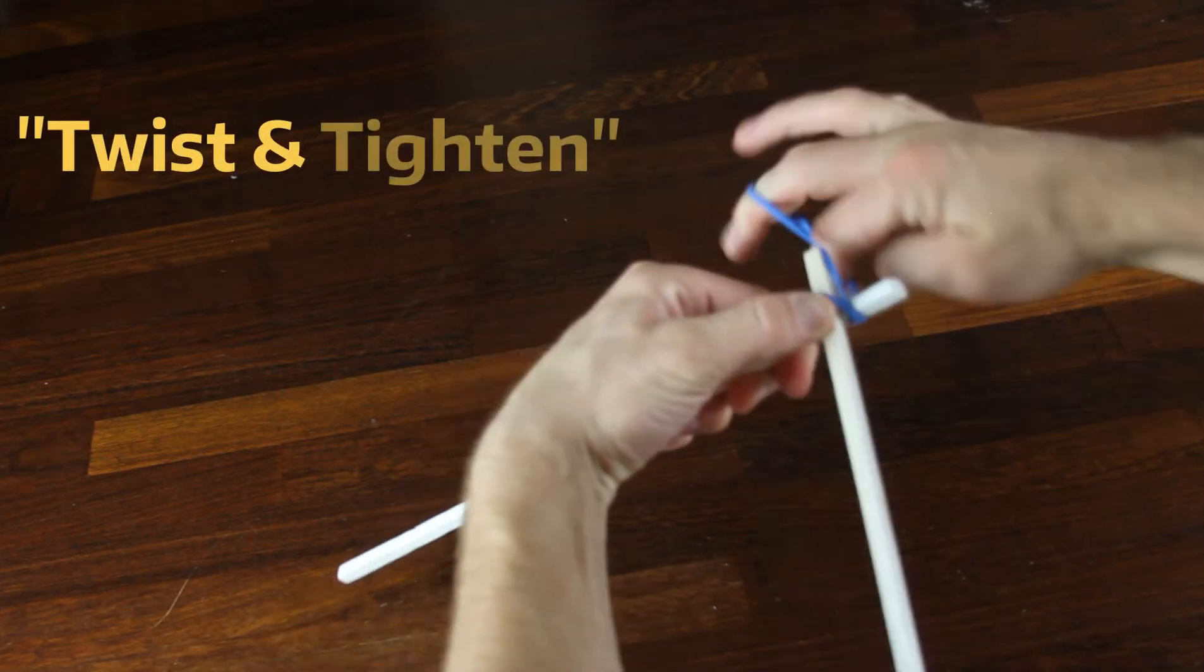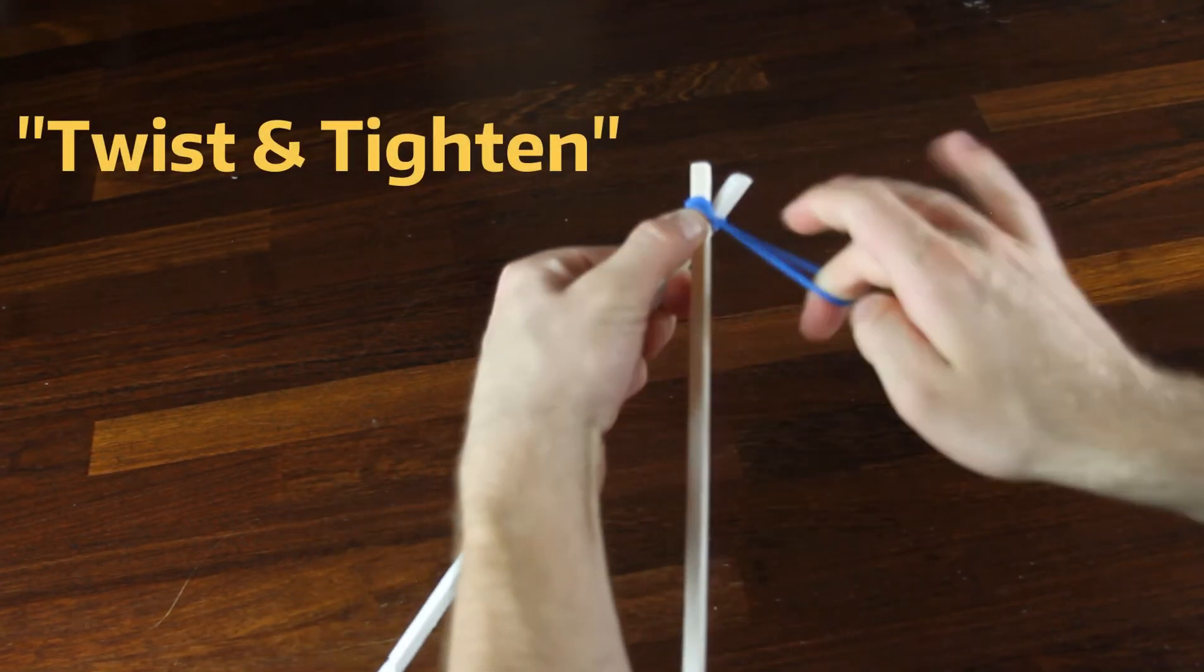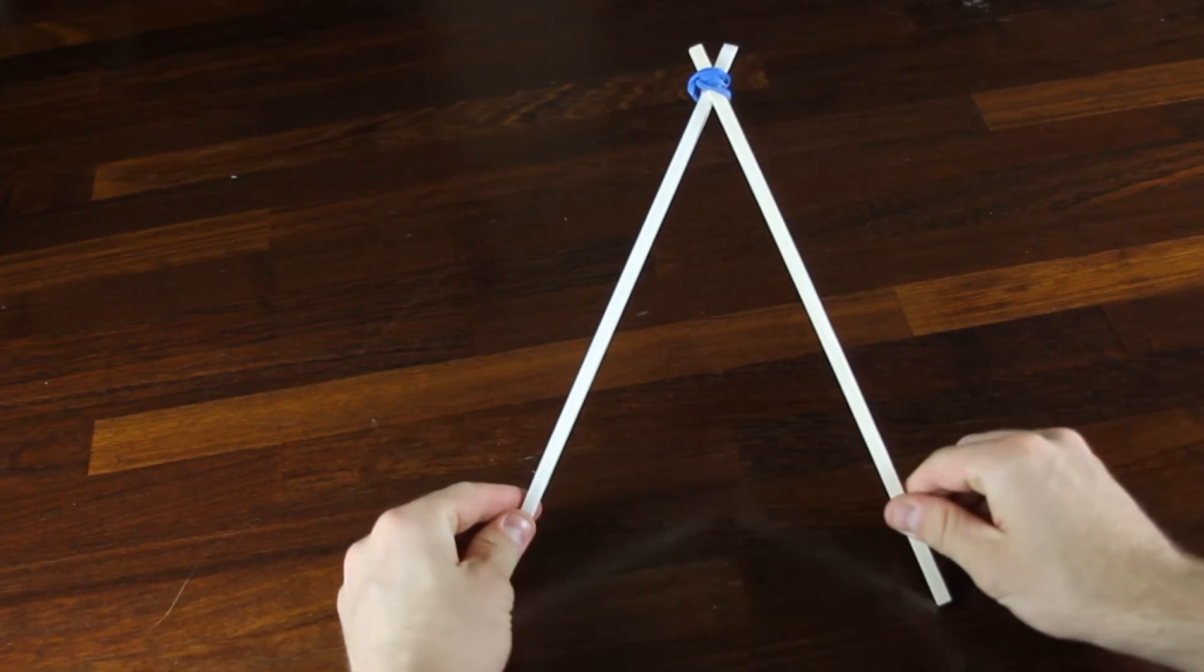Here's a few of those quick rubber band connection tips that we promised you earlier in the video. We call this one the twist and tighten, in case you'd like to lean a few against each other.